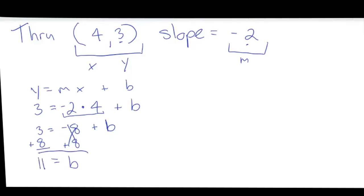So 11 is equal to b, b is equal to 11. So now I know m, and I know b.